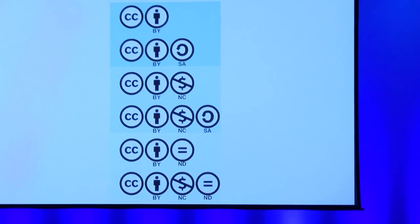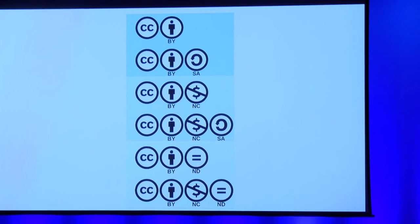The combination of these four elements — attribution, non-commercial, share alike, and no derivatives — create the six licences you see on the screen. They go from very open at the top, which is just 'attribute me', to more closed off at the bottom, which is 'you can copy for non-commercial purposes as long as you attribute me and you can't change it.'